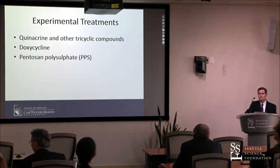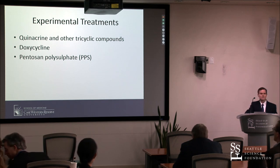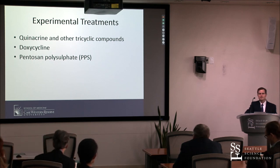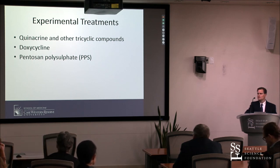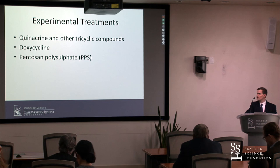We'll briefly cover experimental treatments — unfortunately a quick topic because we haven't found any helpful treatments. People have looked at quinacrine, doxycycline, pentosan, and pentosan polysulfate, all supposedly working by inhibiting conversion of normal prion protein into the pathologic form. None have shown efficacy.